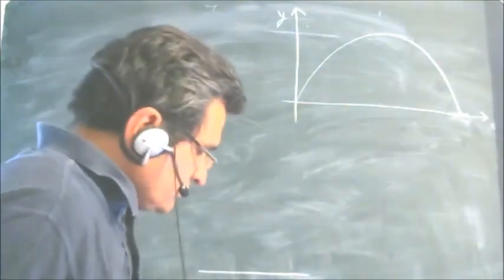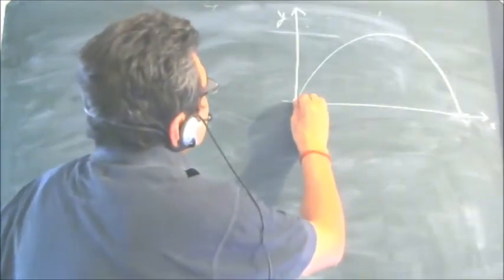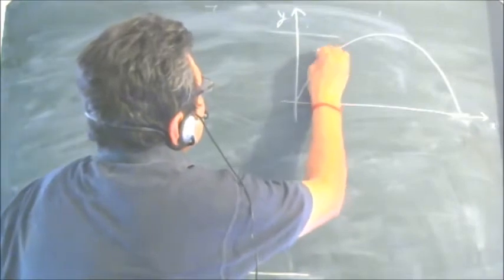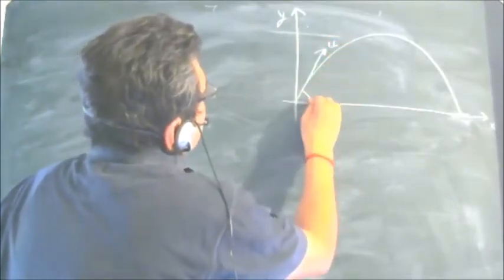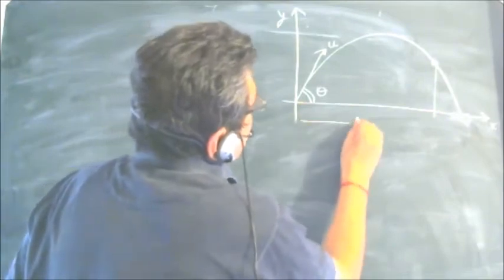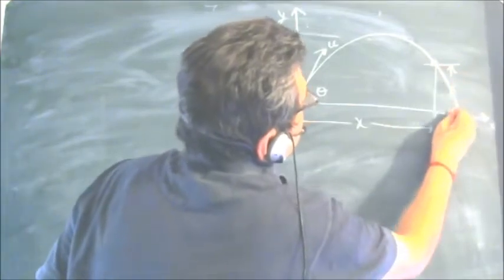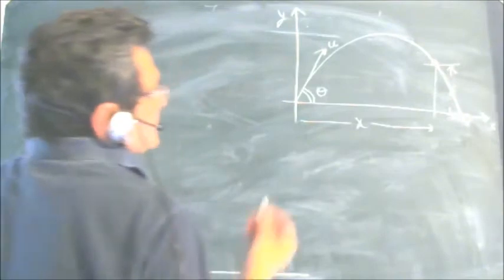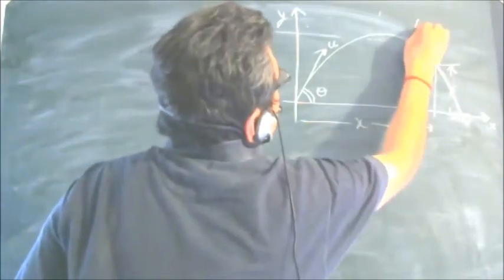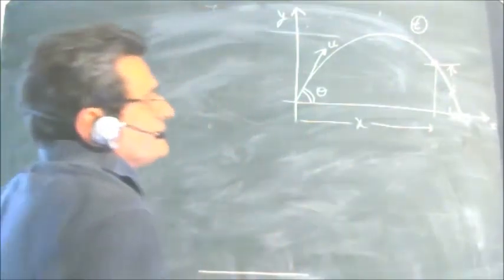In this video, I will be covering the radius of curvature for projectile motion. Let us take a projectile motion where a particle is given initial velocity of u at an angle theta with the x-axis. This we have taken as x, this is y. Let us take a point here at x and y coordinates. So at this location, when the particle is there at a certain point of time, let the time be t. We want to know what is the radius of curvature.